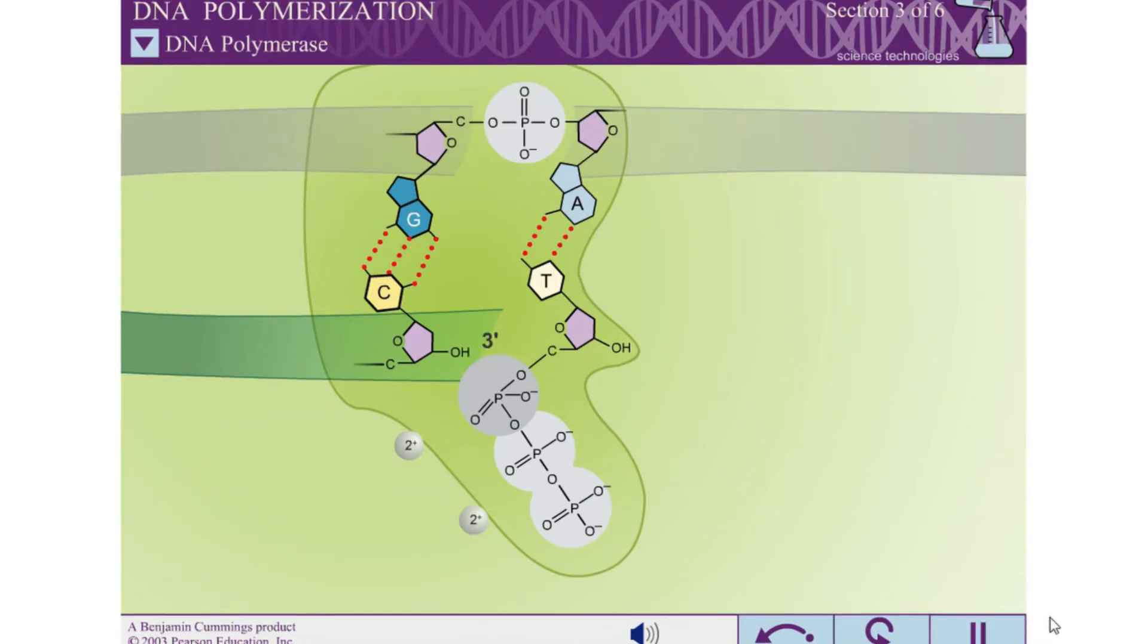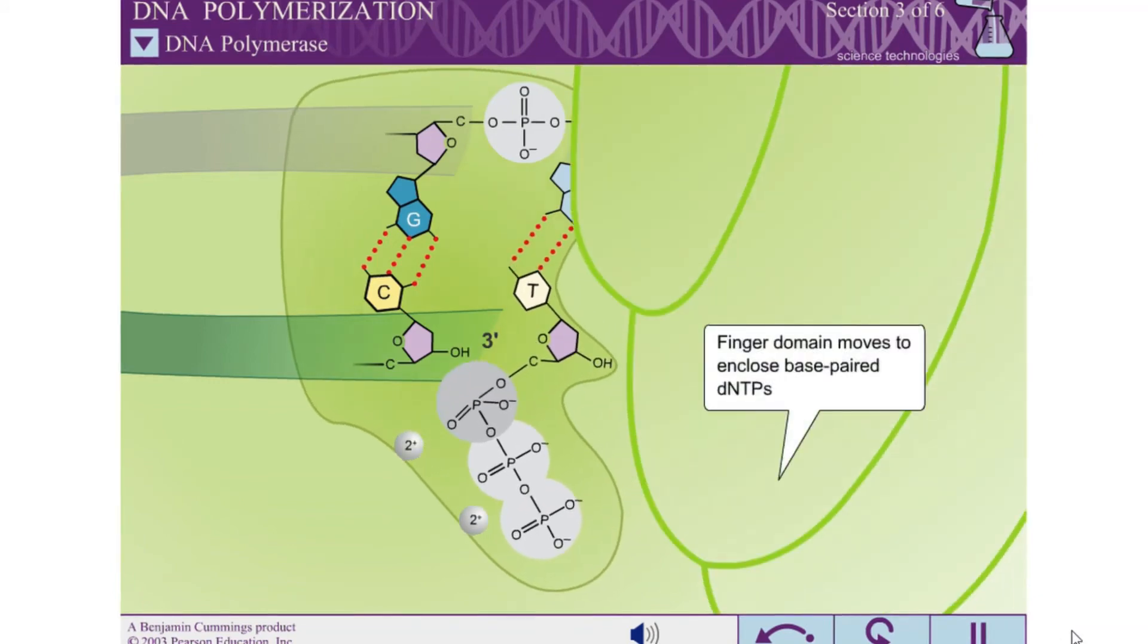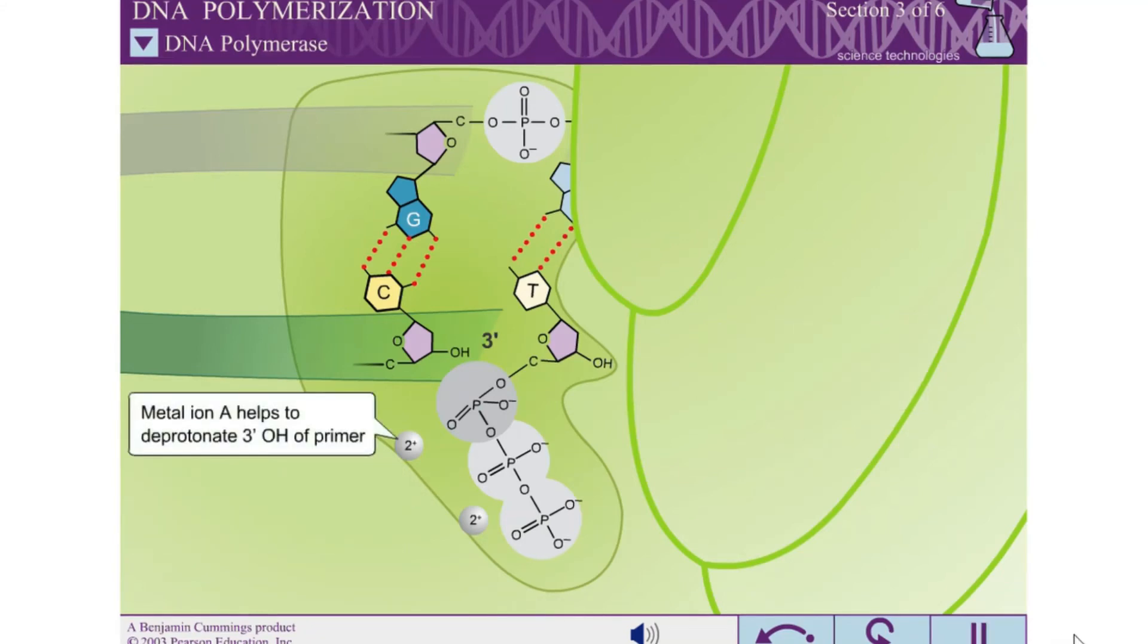Once a correct base pair is formed between the incoming DNTP and the template, the finger domain moves to enclose the DNTP. This conformational change brings the divalent metal ions into the correct positions to function. Metal ion A helps to deprotonate the 3 prime hydroxyl of the primer, producing an oxyanion to attack the alpha-phosphate of the incoming DNTP.